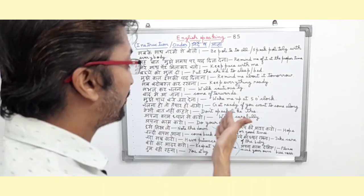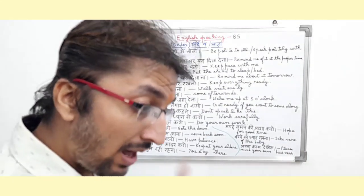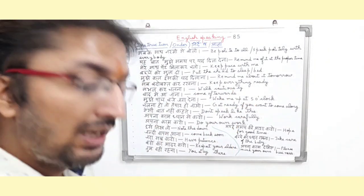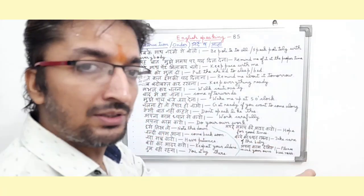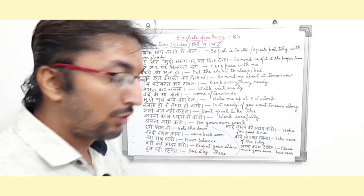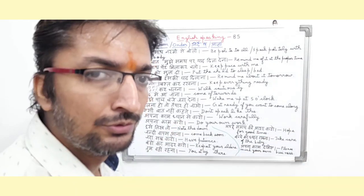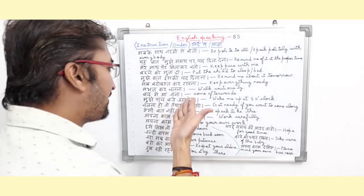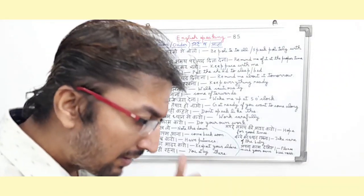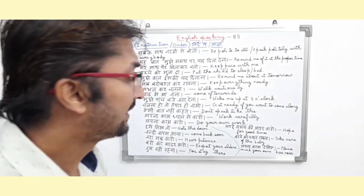In English it means 'walk cautiously.' The sentence basically means that the person is ordering or giving a suggestion to another person. Also, 'come afterwards' — in English it means come afterwards. The sentence basically means the person is saying to another person to come after some time, as he is busy. So it is an order and command type sentence.